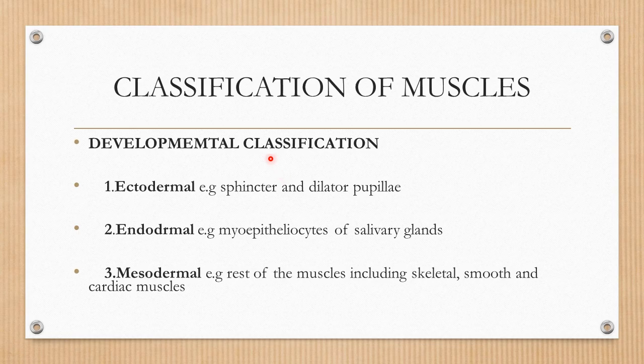So here we are going to start with the classification of muscles. First of all, this is the developmental classification, that is the embryological classification. As you know, embryologically there are three germ layers: ectoderm, endoderm, and mesoderm.